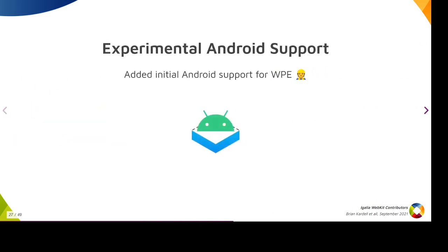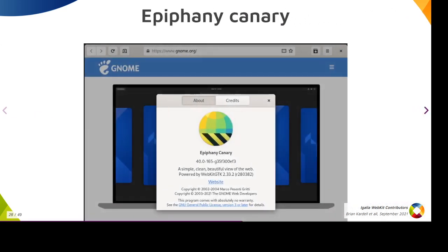A really exciting thing is we made experimental Android support for WPE — there will be another session about that with cool demos. We also created a canary version of Epiphany. Other browsers have canary versions, but Epiphany did not. We don't have a similar thing in WebKit, and I find this really, really handy personally. I hope you check it out.